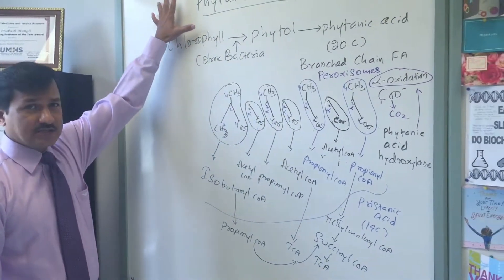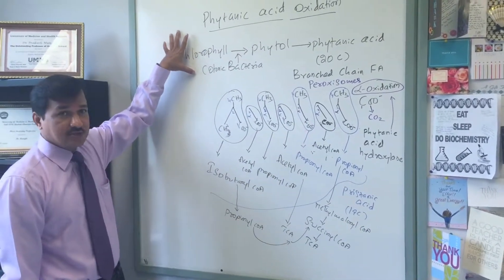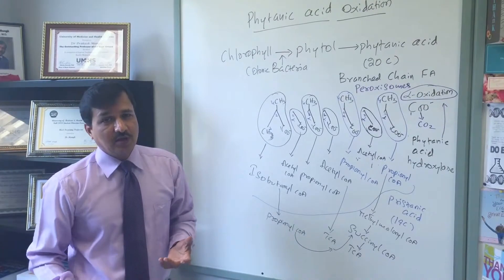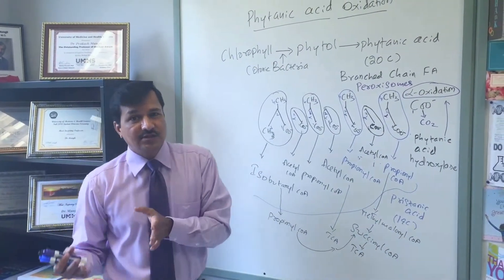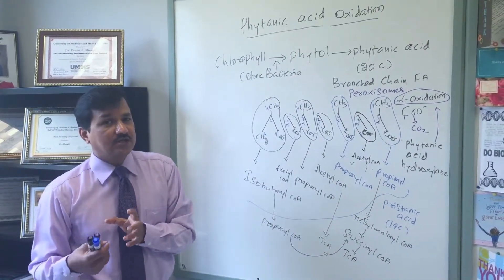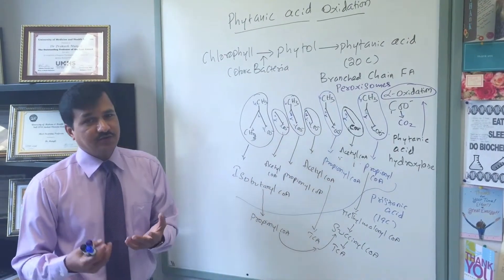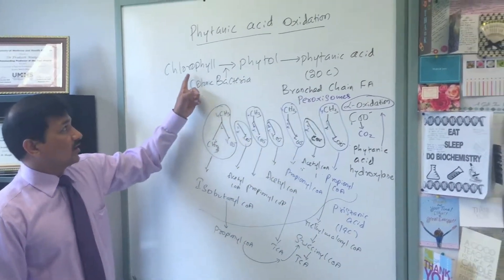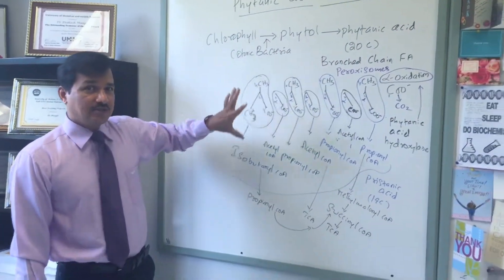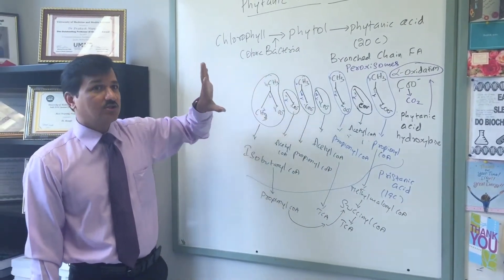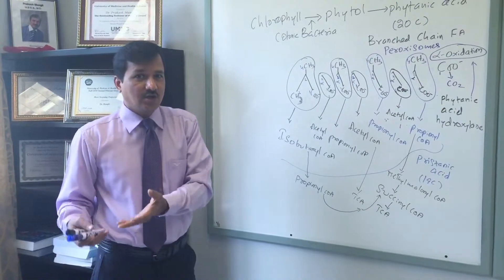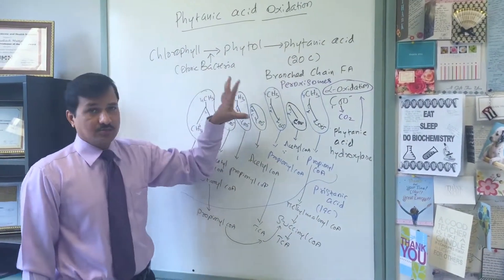So phytanic acid comes from chlorophyll degradation in the intestine: chlorophyll is converted to phytol, phytol to phytanic acid. Note that phytanic acid can become part of adipose tissue fat. Non-vegetarians consuming ruminant meat have higher concentrations of phytanic acid in their blood compared to vegetarians, because ruminant meat accumulates more phytanic acid. Vegetarians also have phytanic acid from chlorophyll conversion, but comparatively non-vegetarians have more due to ruminant meat consumption — since ruminants like cows feed on grass containing chlorophyll.